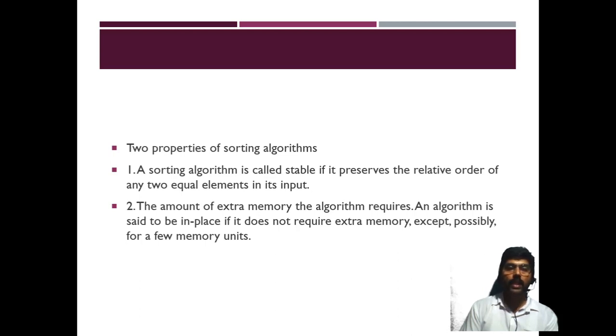The second property is the amount of extra memory the algorithm requires. An algorithm is said to be in-place if the algorithm rearranges the elements without using any extra memory.